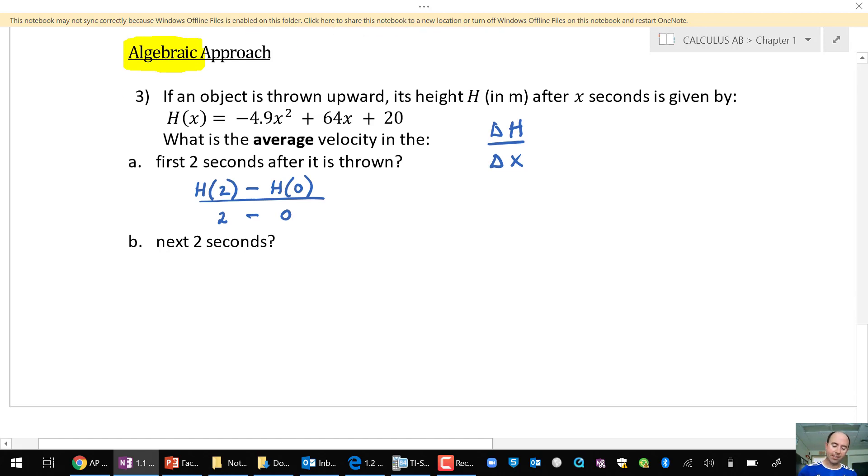Part B, the next two seconds. Well, that would be from 2 to 4. So again, H of 4 minus H of 2, all divided by 4 minus 2.